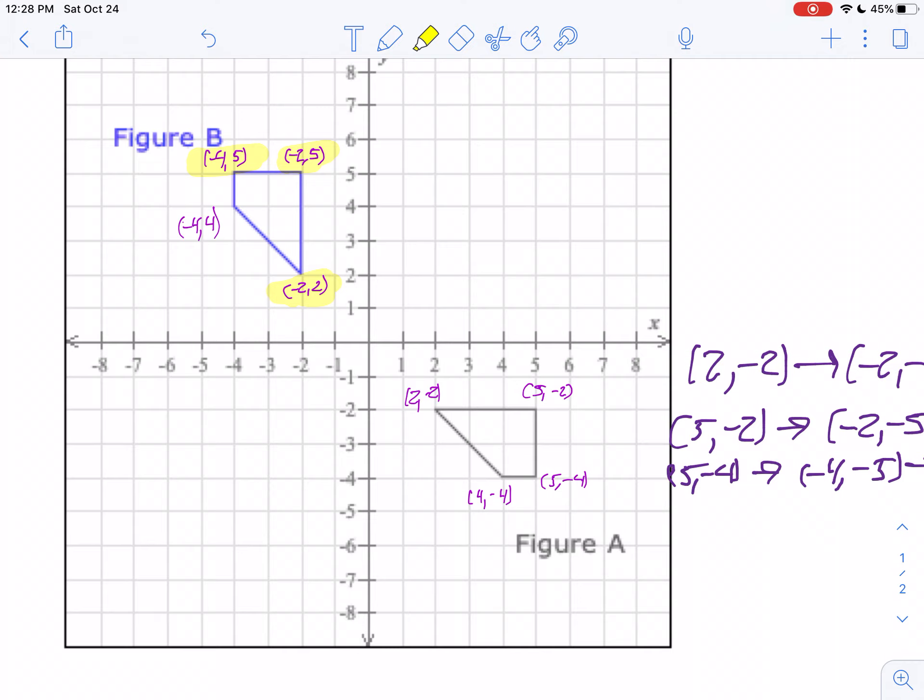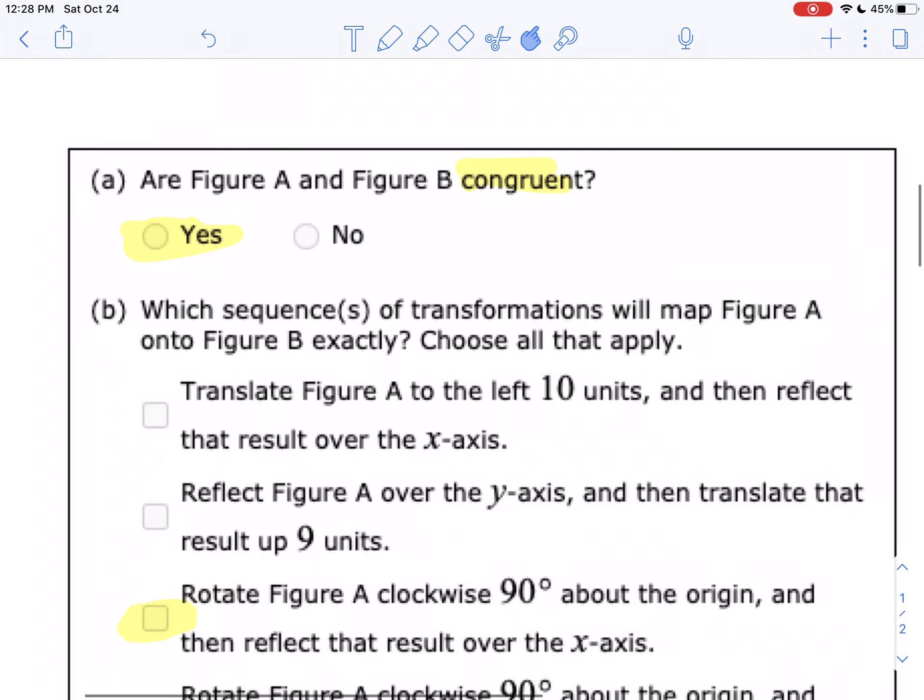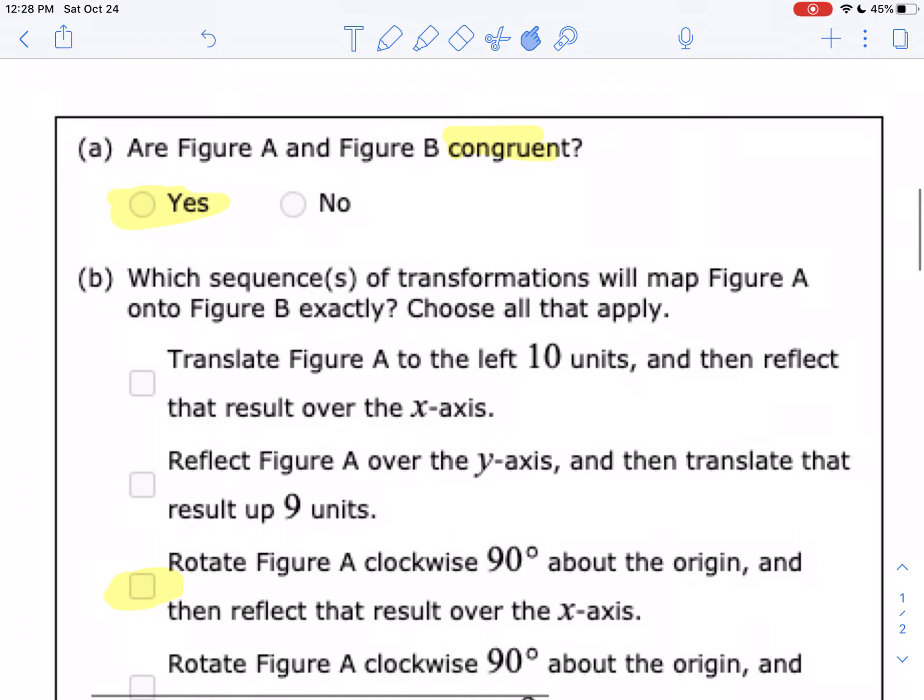I don't think we need to do the fourth one. We can see how this is turning out. So the correct answer is to do the rotation of 90 degrees and then reflect over the x-axis.